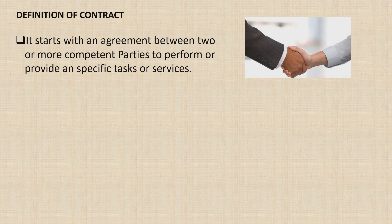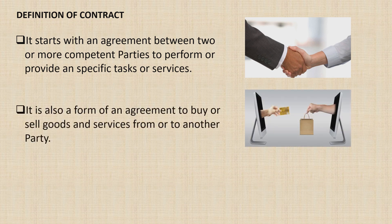What is the definition of contract? It starts with an agreement between two or more competent parties to perform or provide specific tasks or services. The mentioned parties here are between the client or employer and the contractor or service providers. It is important that if you are the client, you have an agreement with an experienced contractor or service provider, and the contractor shall have done projects within or beyond expectations. It is also a form of an agreement to buy or sell goods and services from or to another party.